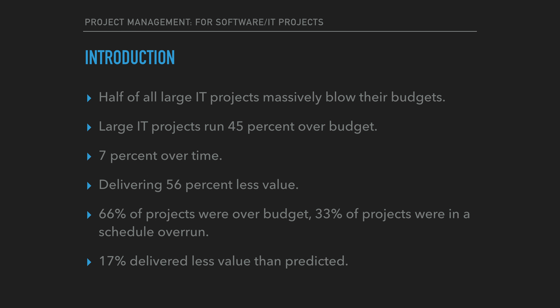More specifically, for the software project type, 66% of projects were over budget, 33% of projects were in a schedule overrun, and 17% delivered less value than predicted.